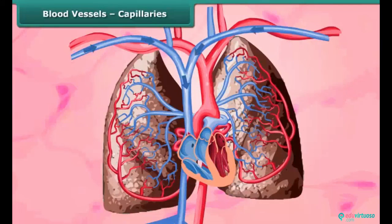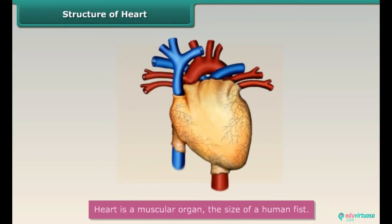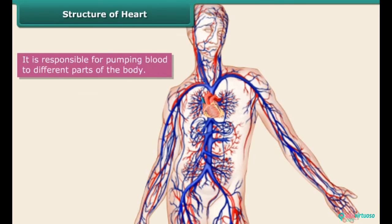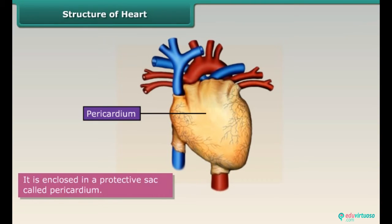The veins then carry deoxygenated blood back to the heart. The heart is a muscular organ located slightly to the left of the middle in the chest cavity. It is the size of a human fist and is responsible for pumping blood to different parts of the body. It is enclosed in a protective sac called the pericardium.